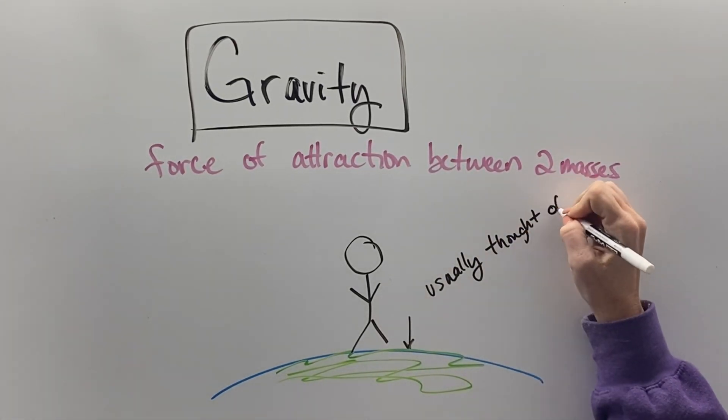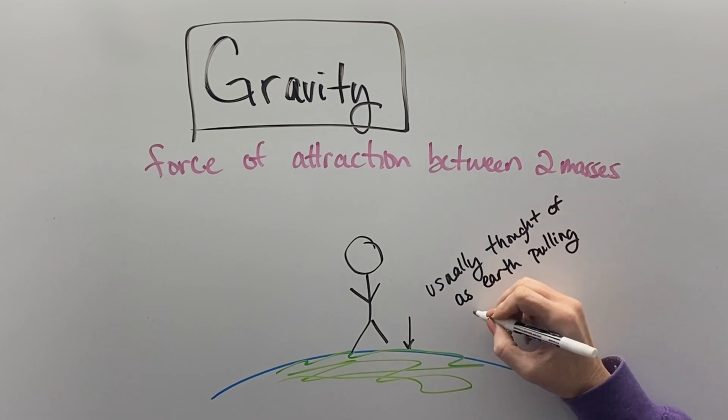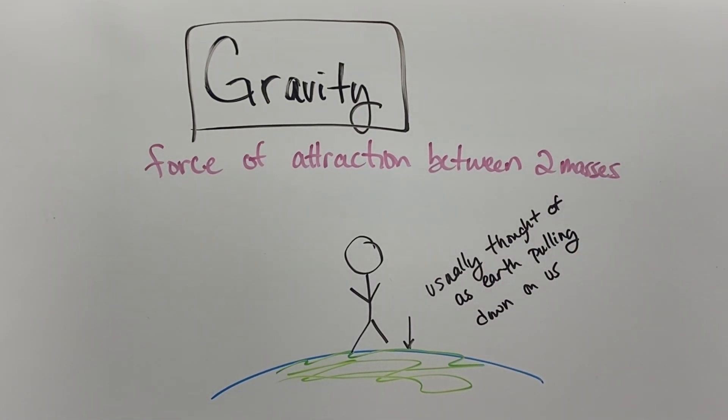Gravity, scientifically, is defined as the force of attraction between two masses, and we usually think that on Earth is a thing that pulls us down or makes us fall.